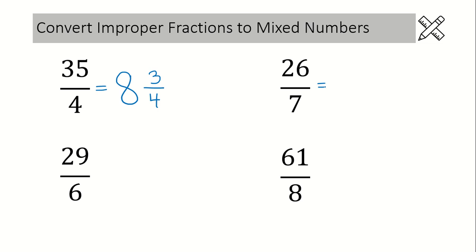In our next example, we have a denominator of 7. So we leave a space, fraction bar, denominator of 7. 7 goes into 26 3 times. 7 times 3 is 21, plus 5 is 26.